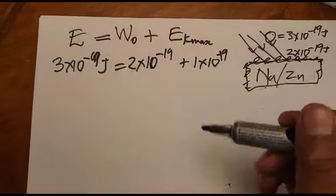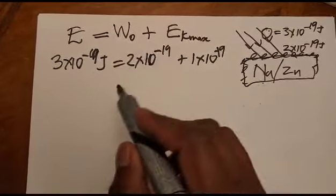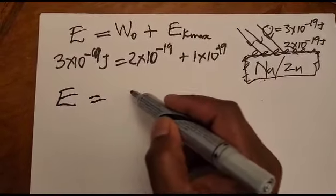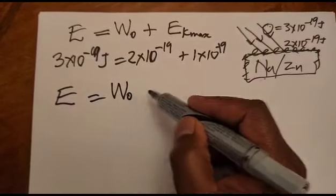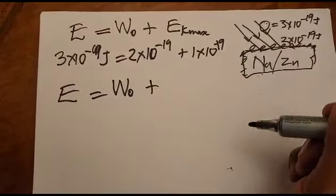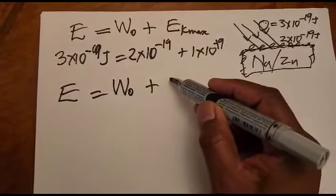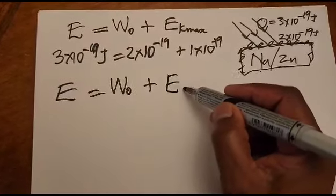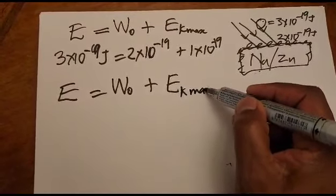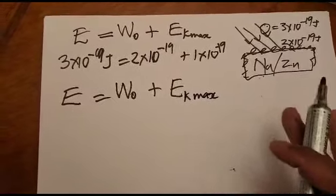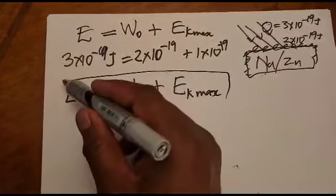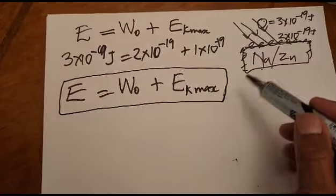The formula we use is: energy of the oncoming radiation equals the work function plus the maximum kinetic energy. A certain amount is absorbed by the metal as the work function, and the remaining energy is converted into maximum kinetic energy, enabling the electron to be ejected and move off the metal.